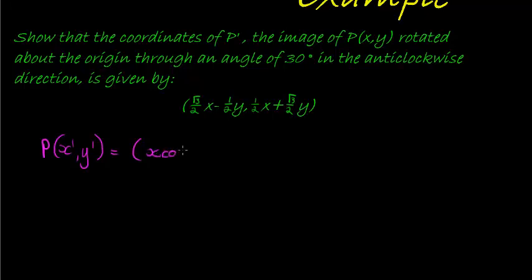x gets multiplied with cos of theta, subtract y multiplied with sine of theta, and that would give me my x coordinate if I'm going in an anticlockwise direction.